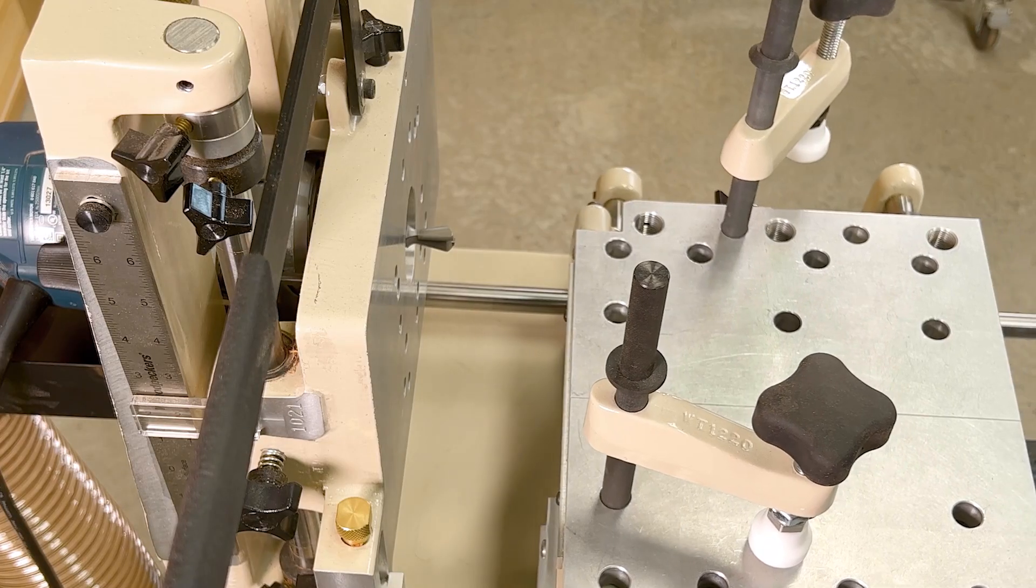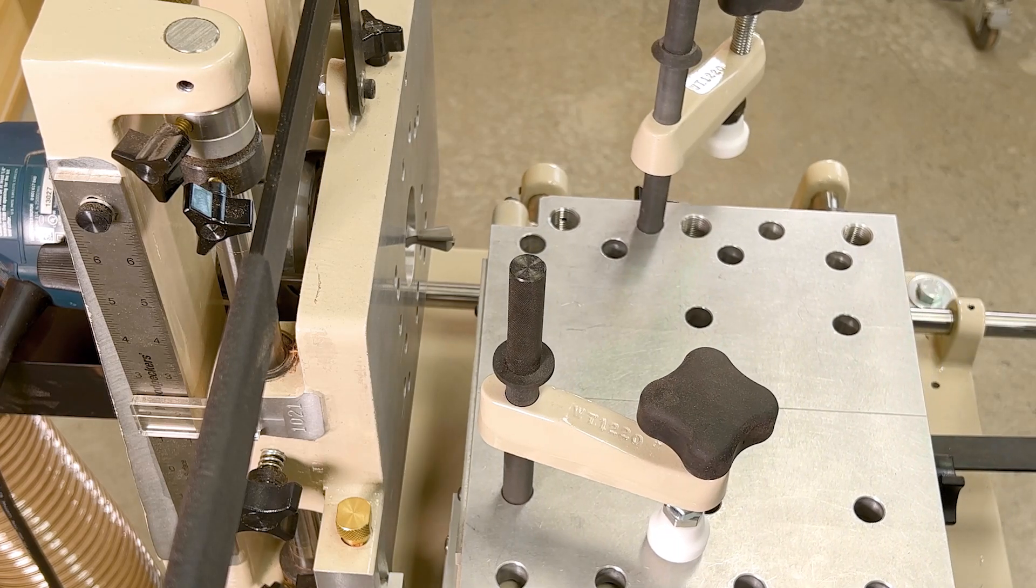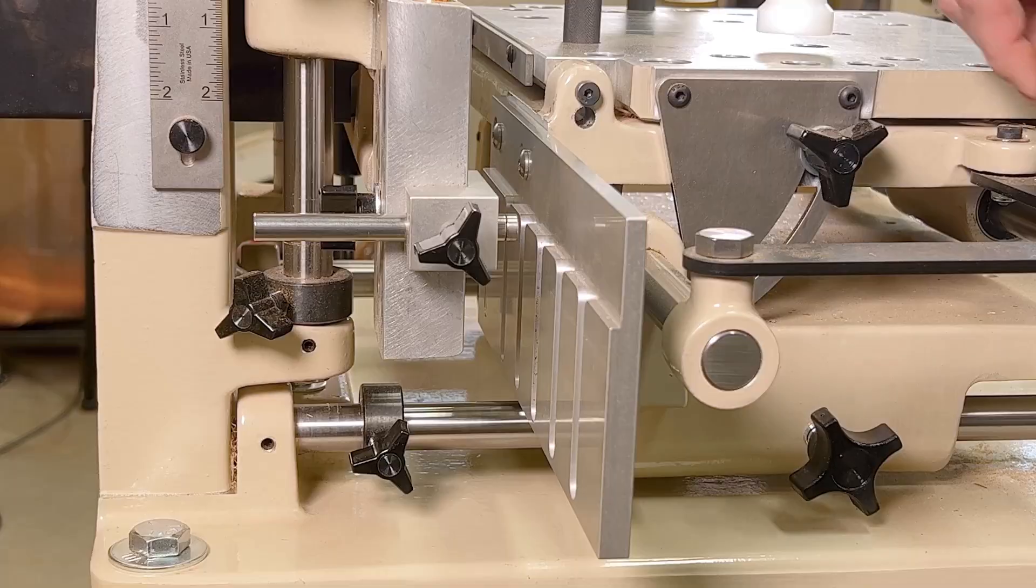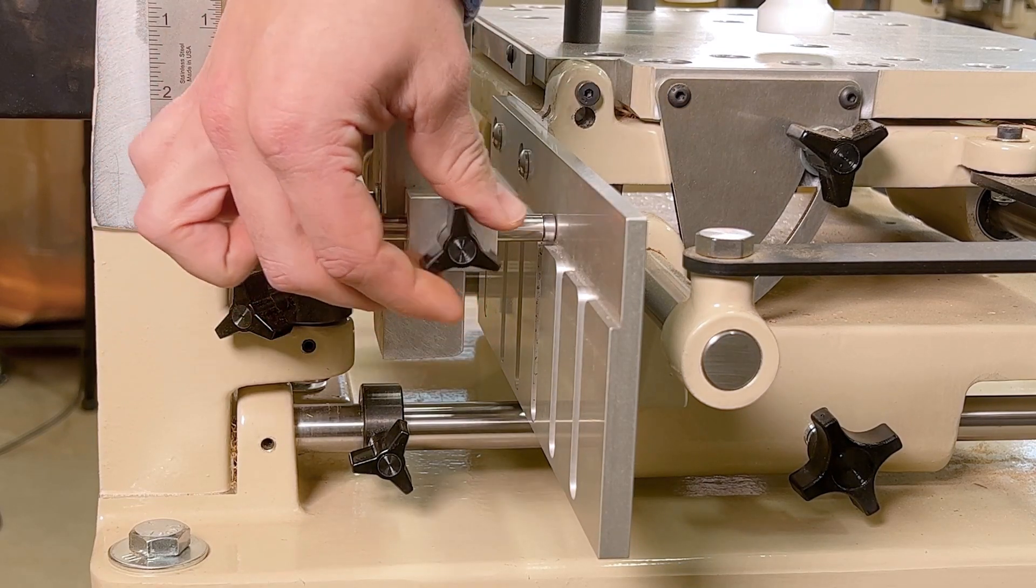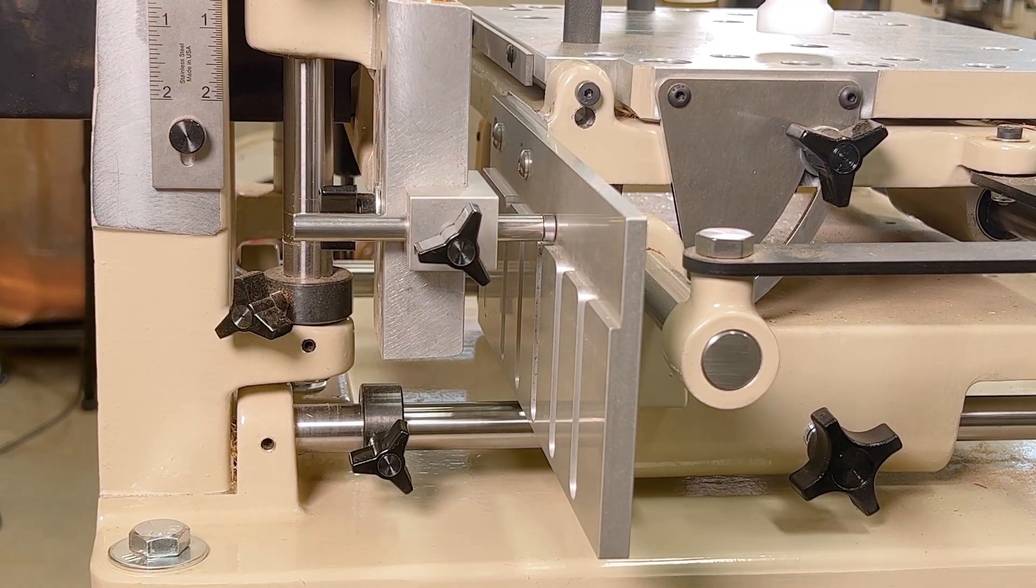Move the horizontal table forward until there is roughly 1 inch of clearance and lock the table in place. Extend the stylus, leaving about ¾ inch between the end of the stylus and the face of the template.